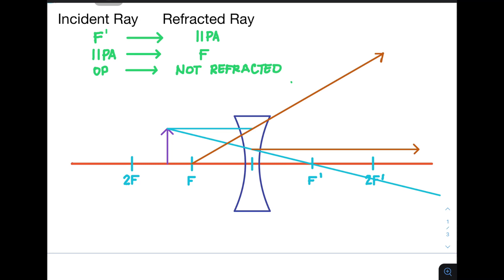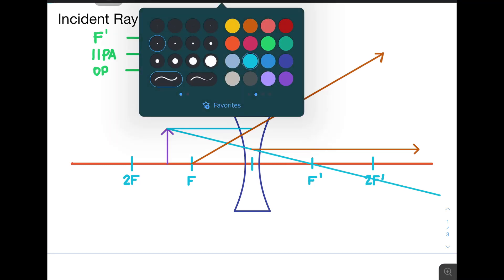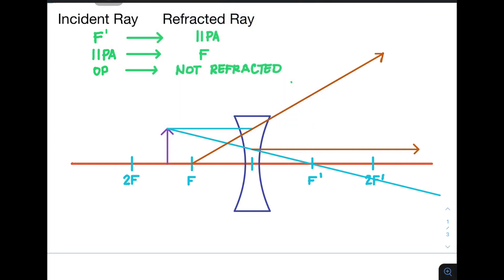And then finally, if a line passes through the optical center, it will not be refracted, just like in convex lens.